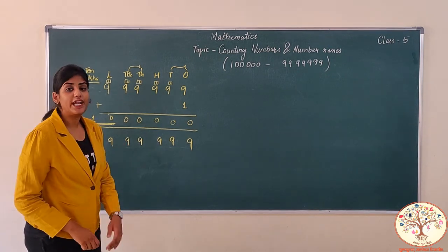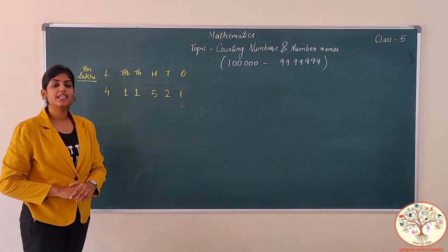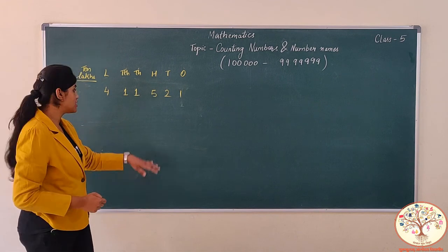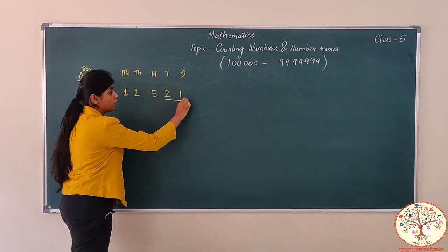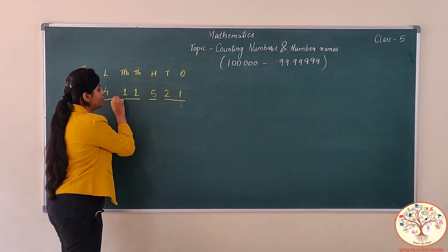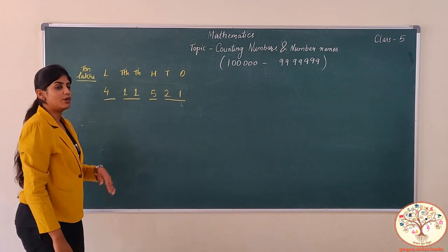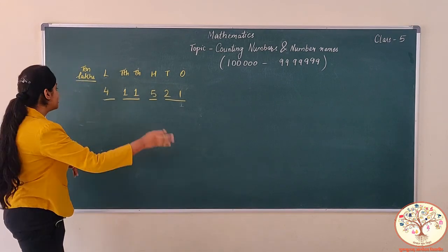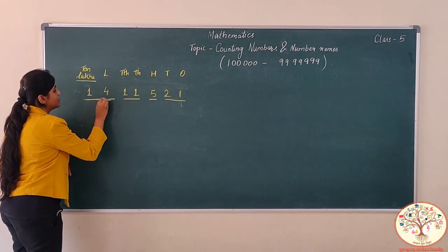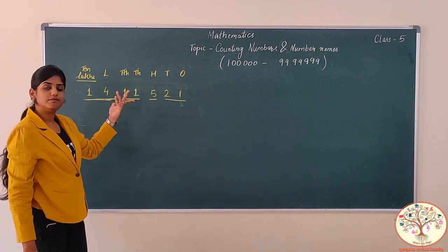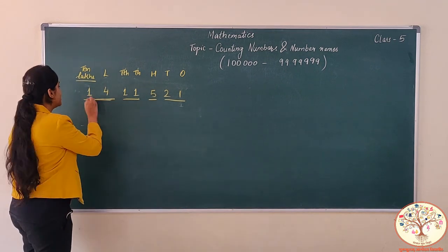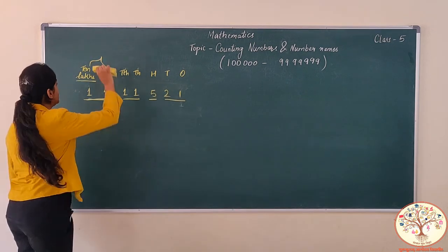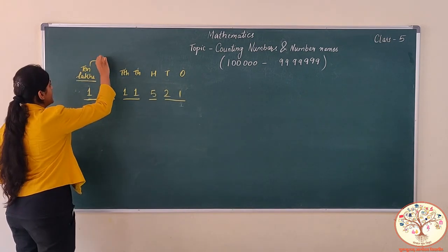Now let's learn how to write the number name for these 7 digits. Recall how you read a 6-digit number — from lakhs, you divided them into 1, 2, 3 and 4 parts, right? As I already told you, the 10 lakhs and lakhs will be read together. So here we make a 7-digit number and read it from the left side. 1 and 4 from the lakhs place value will be read together.